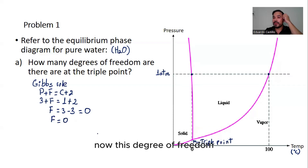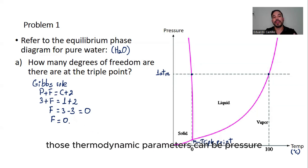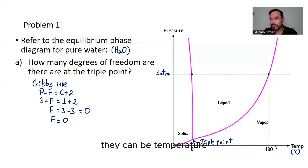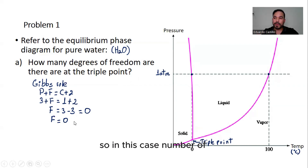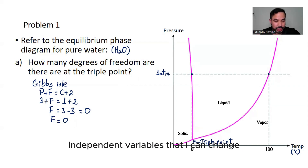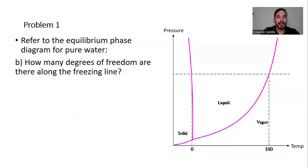This degree of freedom represents the number of independent variables — in other words, the largest number of thermodynamic parameters such as pressure or temperature — that can be varied without determining one another. In this case, the number of independent variables I can change is equal to 0.